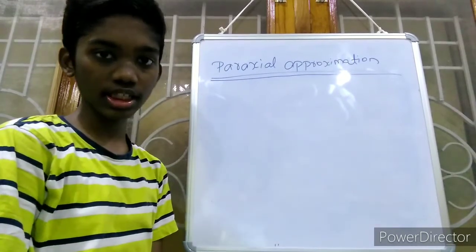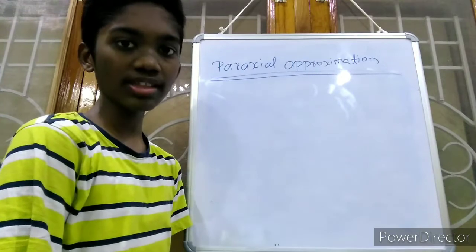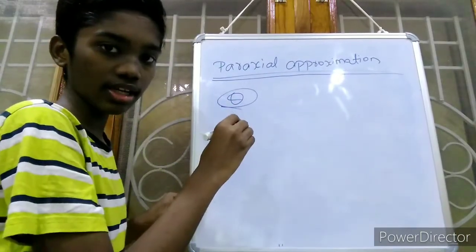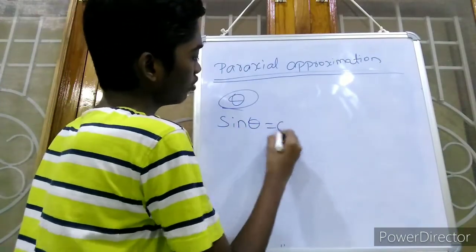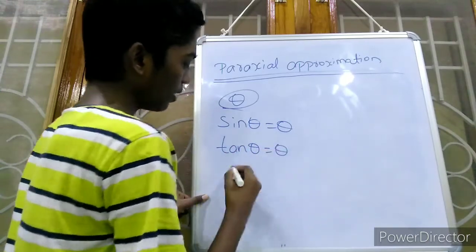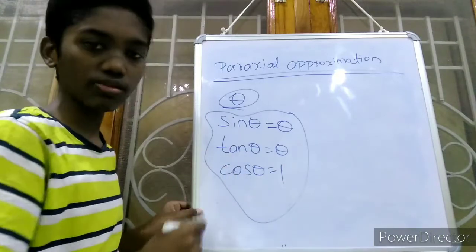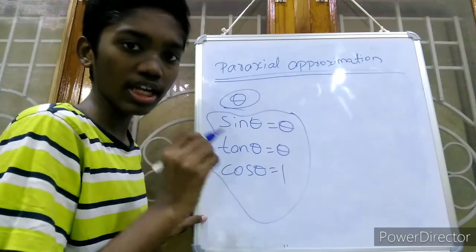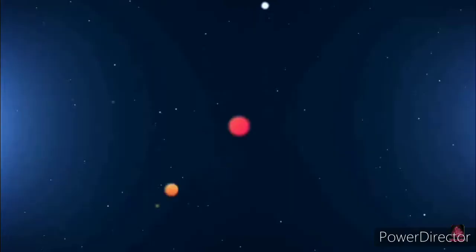Coming to paraxial approximation: paraxial rays make a very small angle with the principal axis. Let us assume that angle is theta. If the smaller angle made by paraxial rays with the principal axis is theta, then sine theta equals theta, tan theta equals theta, but cos theta equals 1. If you just remember these values it will be very easy. The condition that paraxial rays make a smaller angle with the principal axis is called paraxial approximation. I hope you like this video, please do like and subscribe to my YouTube channel, thank you.